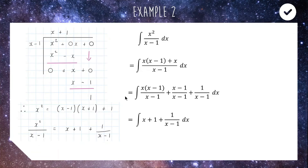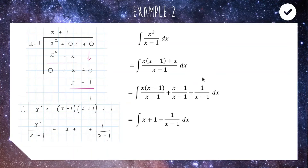If you find the jump from the first line to the last line very confusing, you are not alone — it is hard to see at first. If you don't really like this method, there is another option that some students prefer: you can use long division.